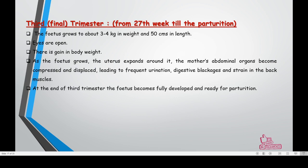The third trimester runs from the 27th week till childbirth, also known as labor. The fetus grows to about three to four kilograms in weight and 50 centimeters in length. The eyes are open. As the fetus grows, the uterus expands and the mother's abdominal organs become compressed, causing discomfort — frequent urination, digestive blockages, and muscle strain. At the end of the third trimester, the fetus is fully developed and ready for parturition.